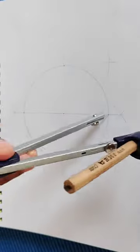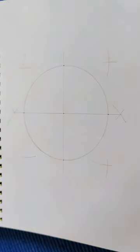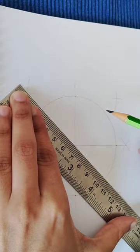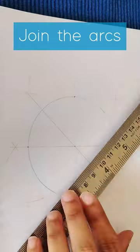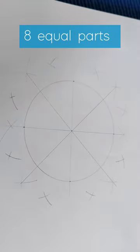Now we can make more parts of this circle by making more perpendicular bisectors as shown in the video. Join the arcs passing through the center of the circle with a straight line and now you have your circle divided into eight equal parts.